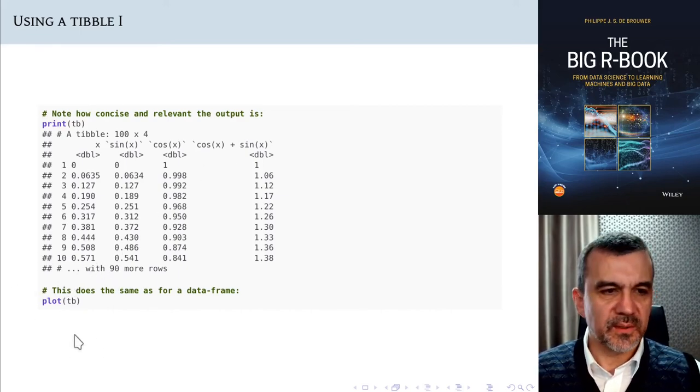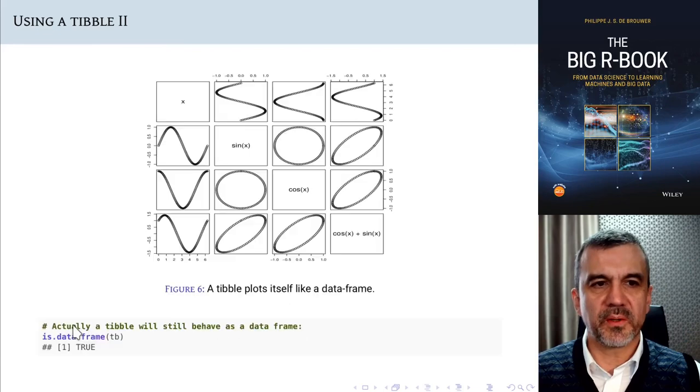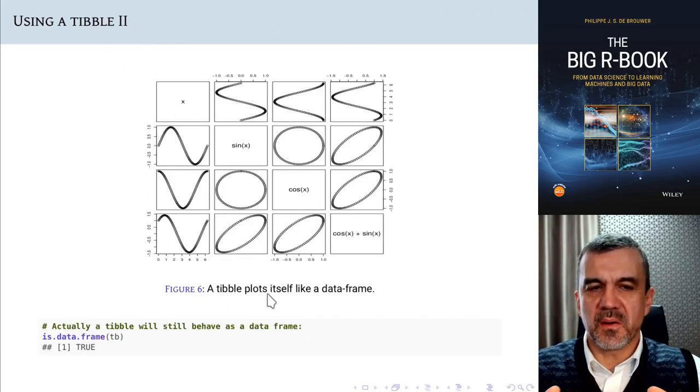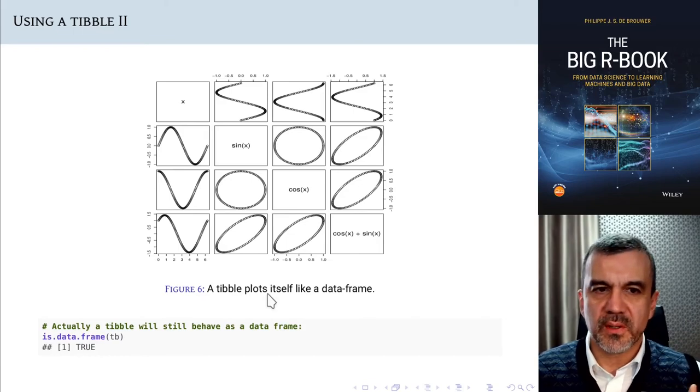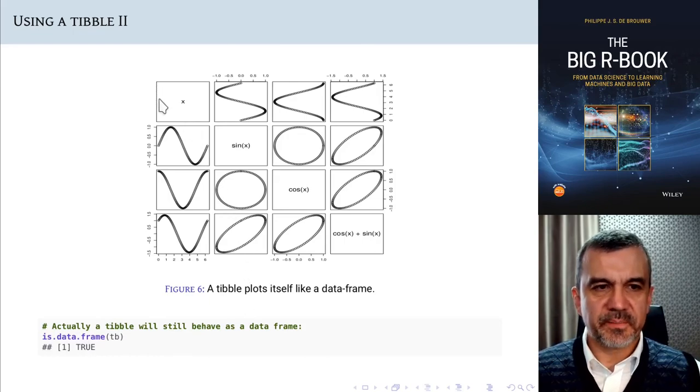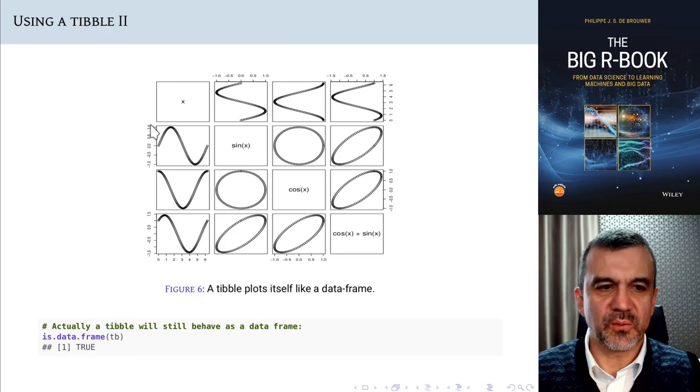All the other things that you were used to do with data frames will still work. For example, plotting will result automatically in such a combination of all possible dependencies of parameters one to the other. So the first column was the x, and then we have the sine of x, the cosine of x, and the sum of sine and cosine. All the rest, I think, is just beautiful and worth to have here.